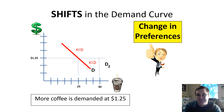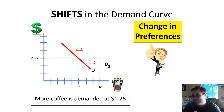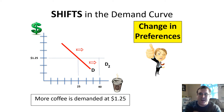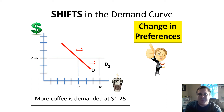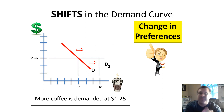Another shifter is a change in preferences. Something can become very popular overnight. For example, about 20 years ago there was a Tickle Me Elmo craze — a doll of Elmo that would giggle when tickled. People were paying about a thousand dollars for that doll because it was the popular gift that Christmas, which shifted the demand curve to the right.